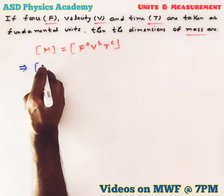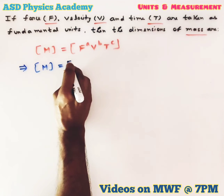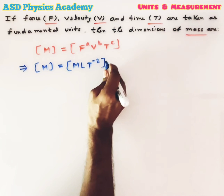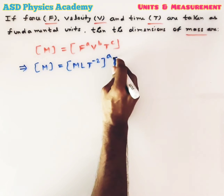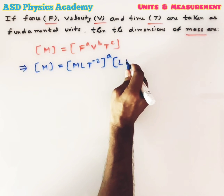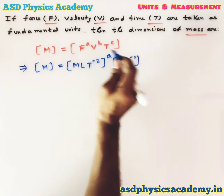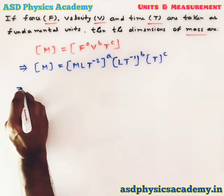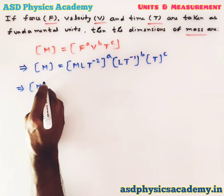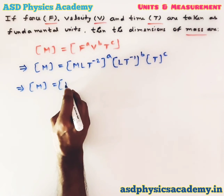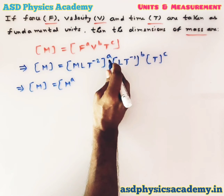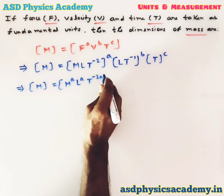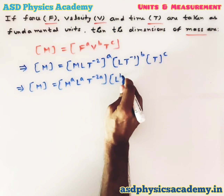We can write M equals: for force, the dimensional formula is [MLT⁻²] to the power A; for velocity, [LT⁻¹] to the power B; and for time, T to the power C. Expanding, we get M to the power A, L to the power A, T to the power −2A from the force term, and L to the power B, T to the power −B from the velocity term.